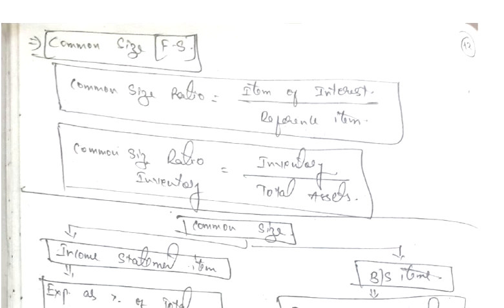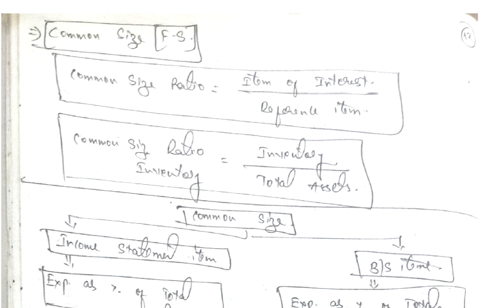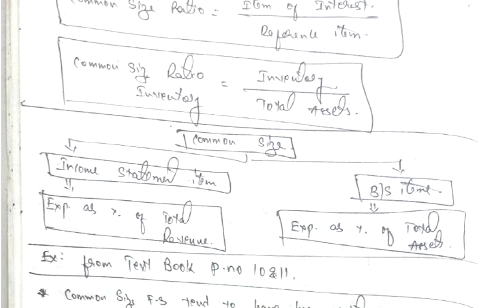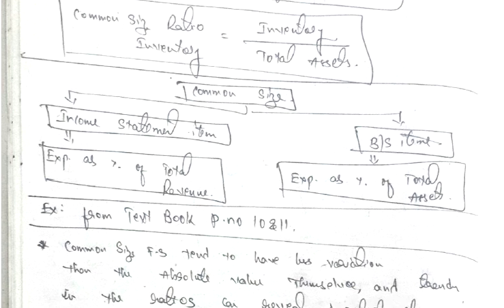Common size financial statement, common size ratio equals item of interest by reference item. For example, if a common size ratio for inventory, inventory is the item of interest and reference item is the total asset because inventory is an asset to the company. So reference item is total asset.